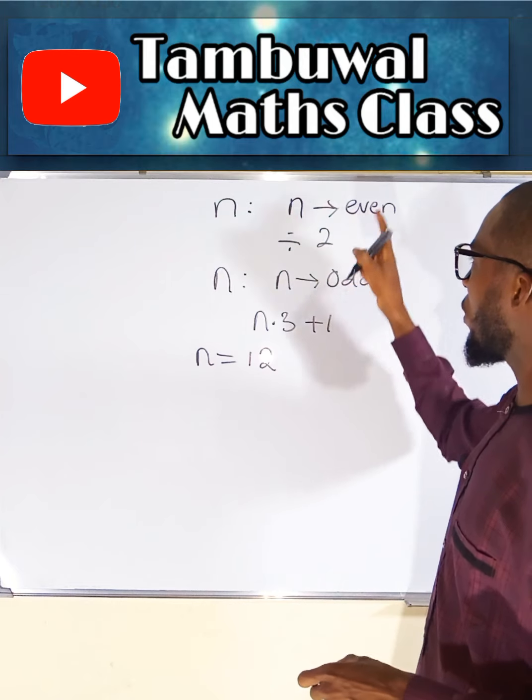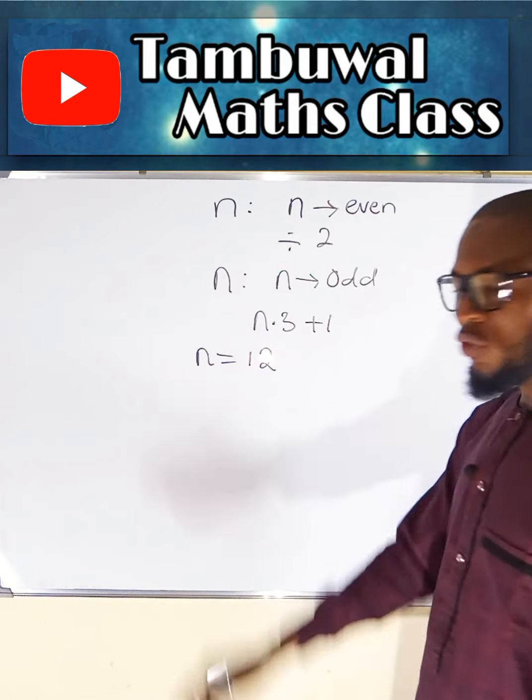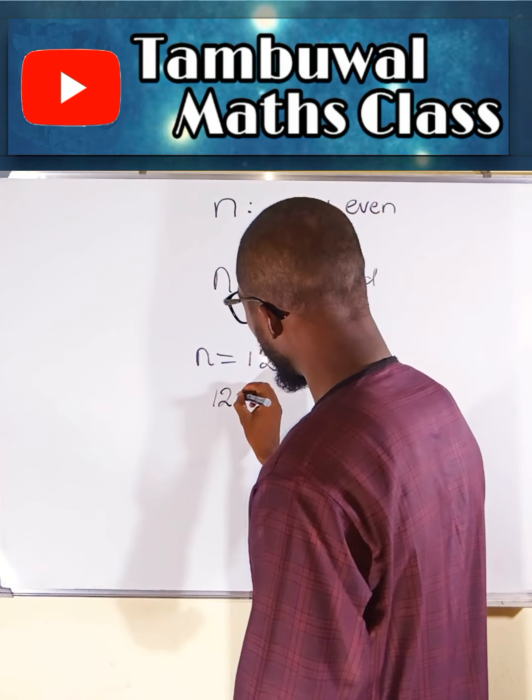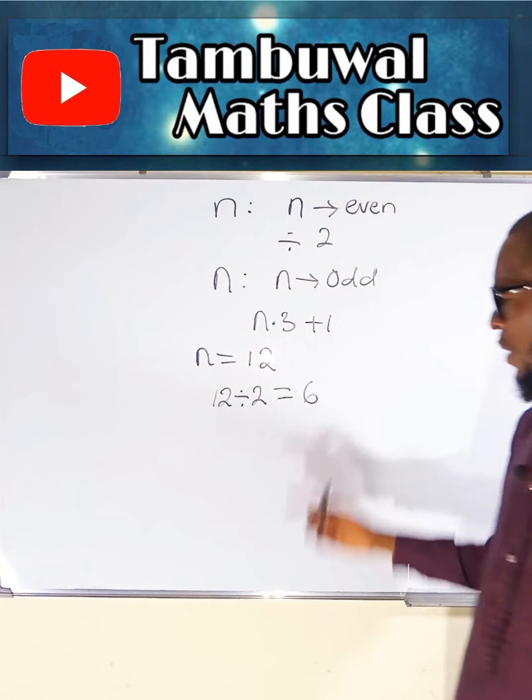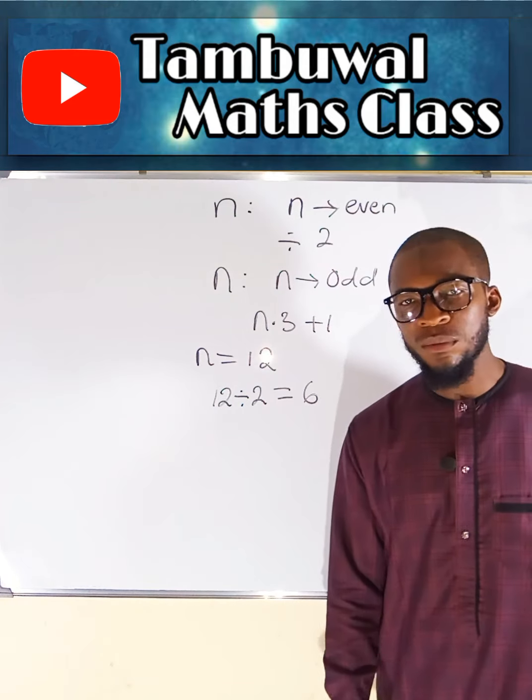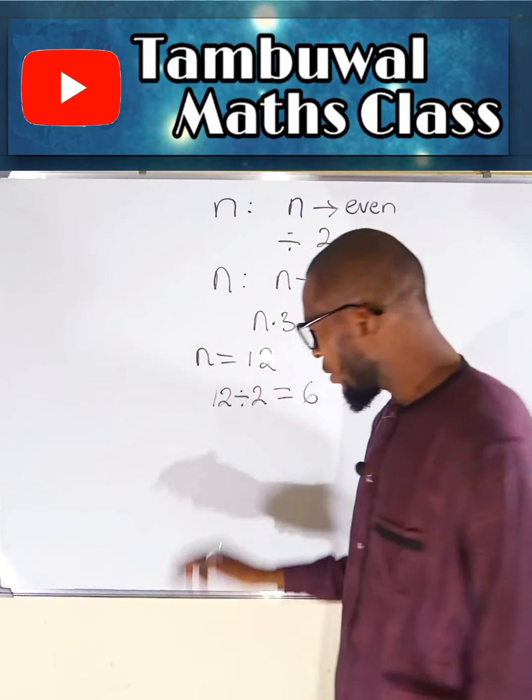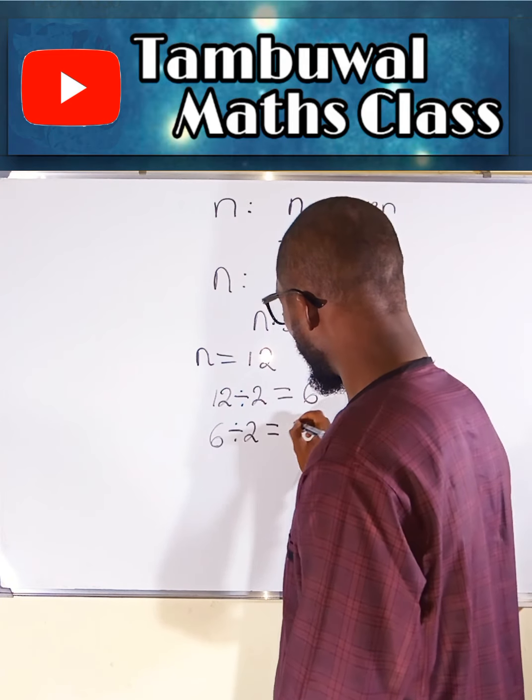Since I said if we choose an even number, we are going to divide it by 2. And hence, I am going to divide this 12 by 2. So 12 divided by 2 will give us 6. 6 is also an even number. So I am going to divide this 6 by 2 again. 6 divided by 2 will give us 3.